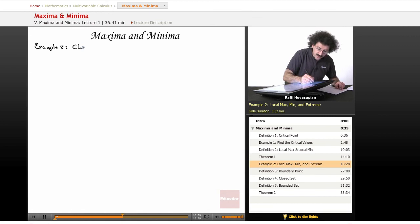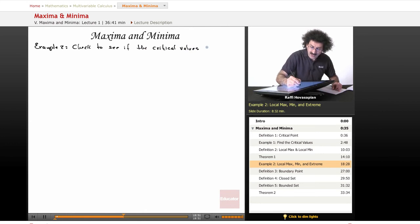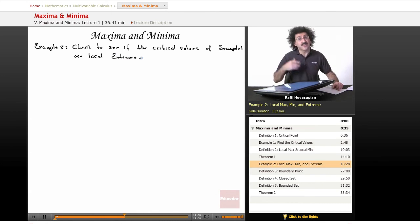Example 2. Let's check to see if the critical values of Example 1 are local extrema, or local maxes or mins. Again, just because they're critical values, that's not a guarantee. We have to check to see if they're local maxes or mins.